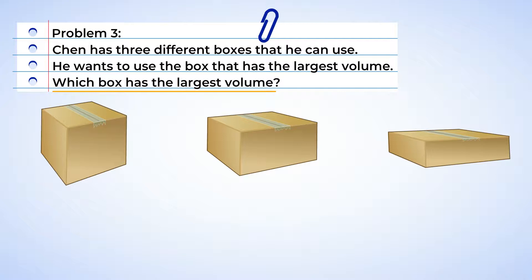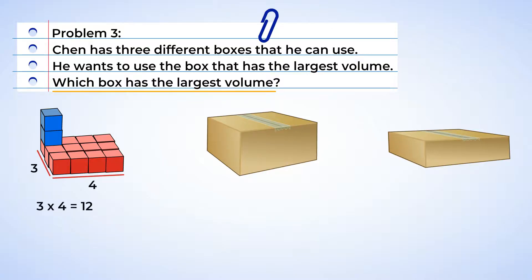All right, let's take a look at the first box. All right, on the base layer, there are three rows of four. Three times four is 12, and this means that there are 12 blocks on the first layer. And since there are three layers, well, we can multiply 12 by 3, and that gives us a product of 36. Okay, so this first box has a volume of 36 cubic units. That can hold a lot of stuff.